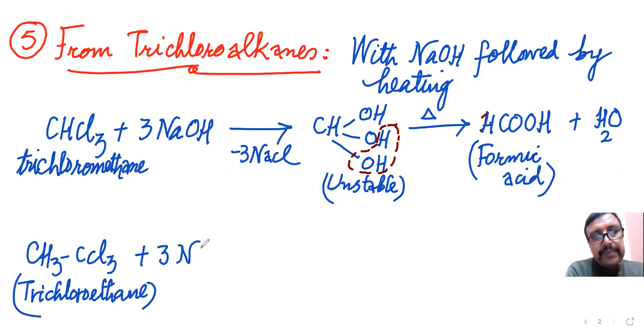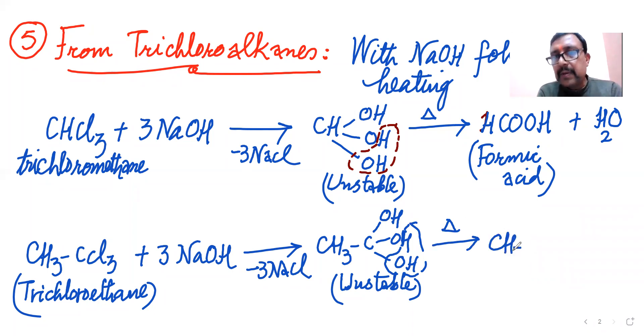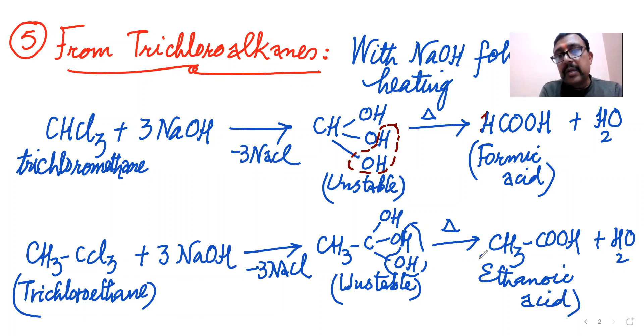So the first acid is methanoic acid or formic acid. One carbon chain. Similarly, trichloroethane plus three NaOH. Three NaCl will be removed. Then it will be CH3 single bond C with three Cl and three OH. There can never be more than one OH on carbon, so it is unstable.